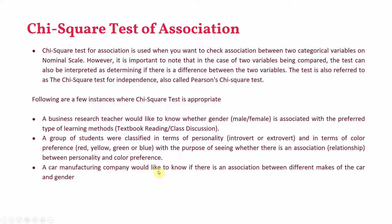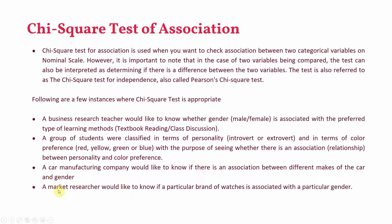A car manufacturing company would like to know if there is an association between different makes of the car and gender — whether a particular gender prefers a particular make of the car. In each of these scenarios, both variables are on nominal scale and you want to test the association between them, so we use the Chi-square test of association. Similarly, a market researcher would like to know if a particular brand of watches is associated with a particular gender.